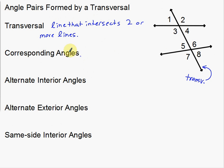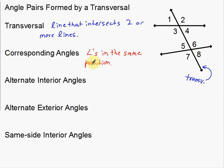Corresponding angles — different teachers and different books will have different definitions. I like to stay less formal. I like to say that corresponding angles are angles in the same position. So if I look over here, I want to find an example of angles that are in the same position. When I'm finding angle pairs, I want to look at the first intersection and the second intersection. So with a pair of angles, you always start with one — I'm going to start with angle one right there.